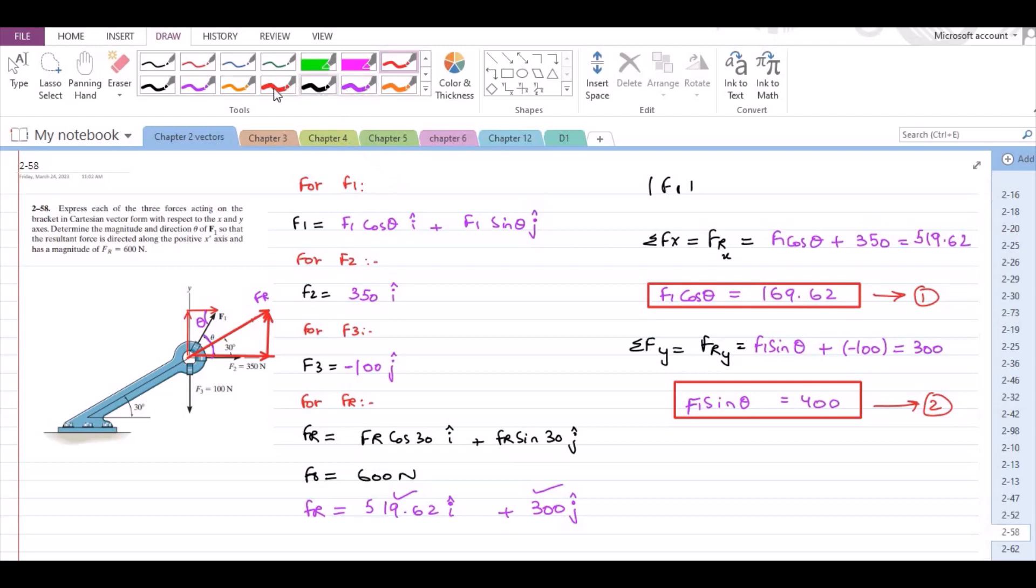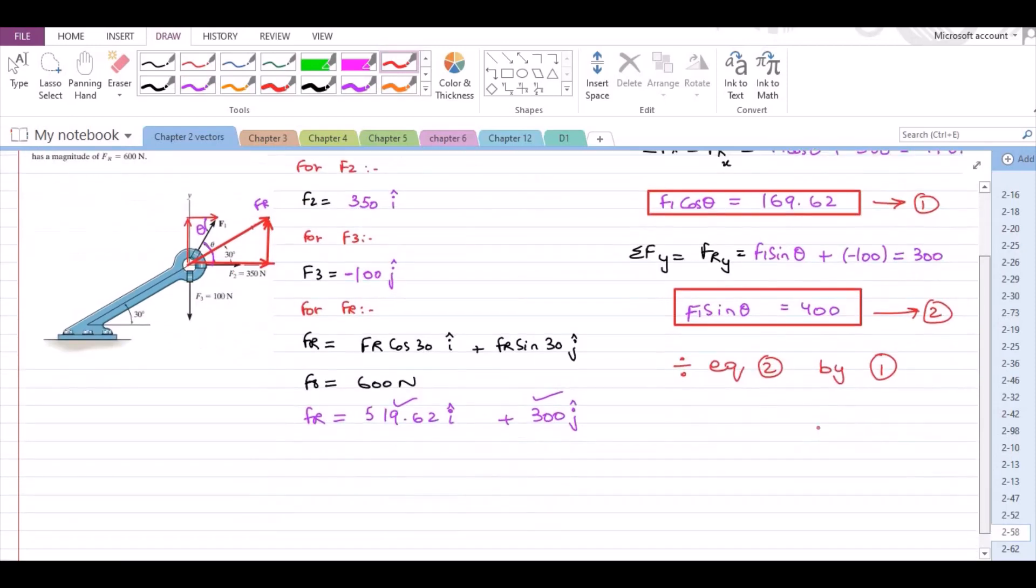Now divide equation 2 by equation 1. So we have F1 sin theta divided by F1 cos theta equals 400 over 169.62.